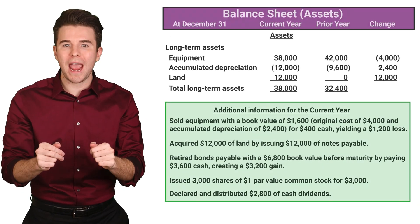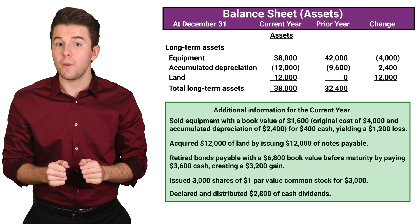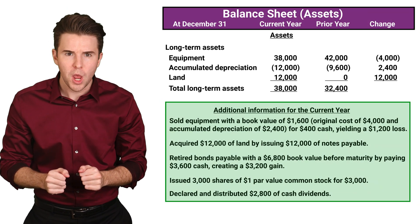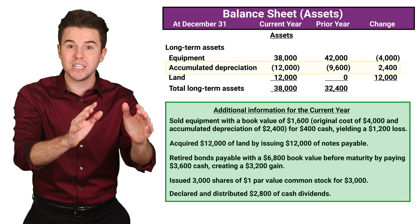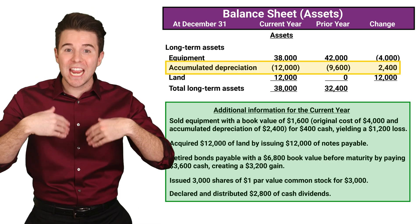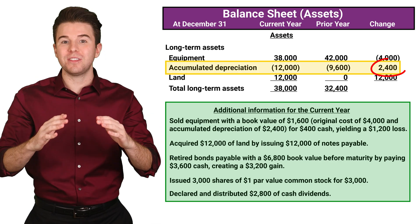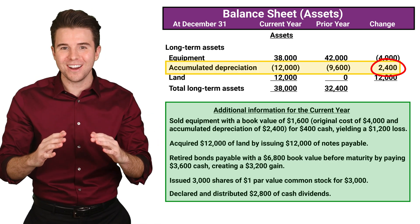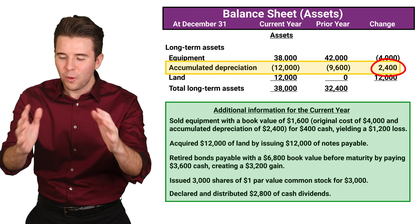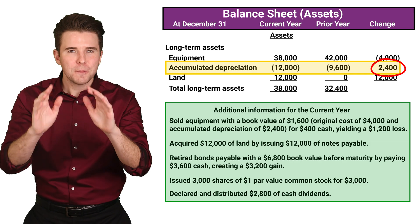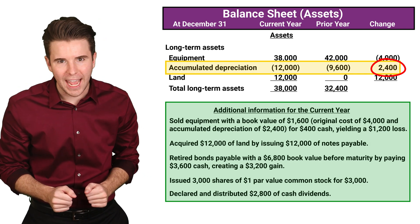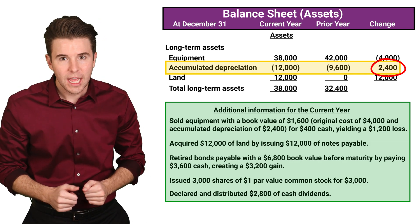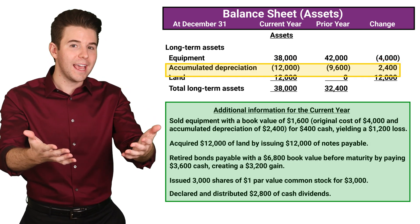Back to our long-term assets section of our balance sheet, we see accumulated depreciation increased by $2,400. However, depreciation has no effect on cash, so we move on.